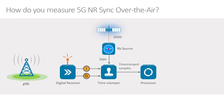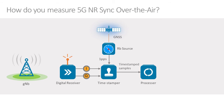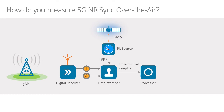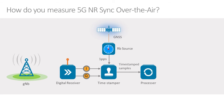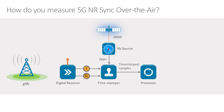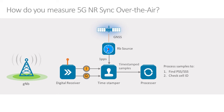How does the measurement work? We have a setup where we have a GPS receiver disciplining a rubidium source, which provides a 1PPS reference — this is our time reference. Then we have a digital receiver which receives the signal from the gNB and turns it into digital I&Q samples. Those samples are timestamped from the reference and then processed to find the secondary and primary synchronization signals, from which we determine the cell ID, calculate the time to the start of frame, and figure out the time error.